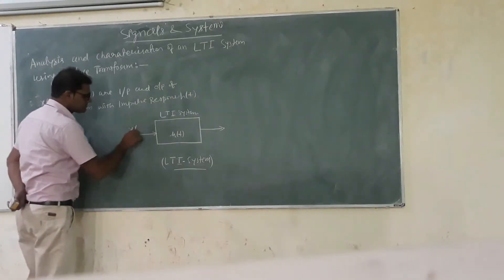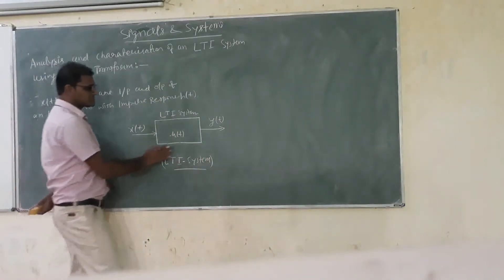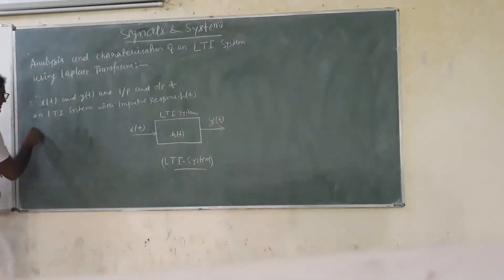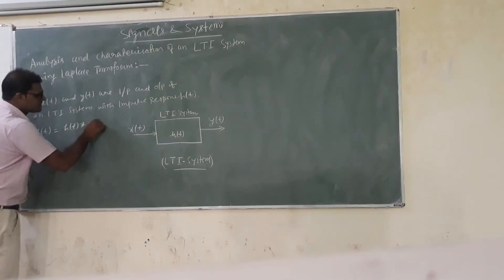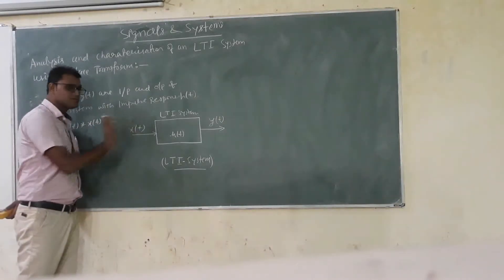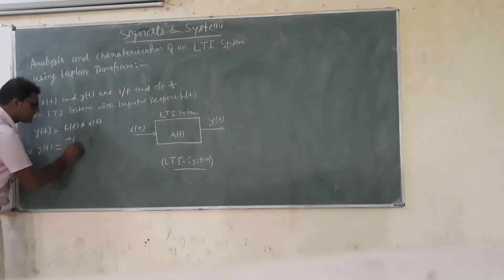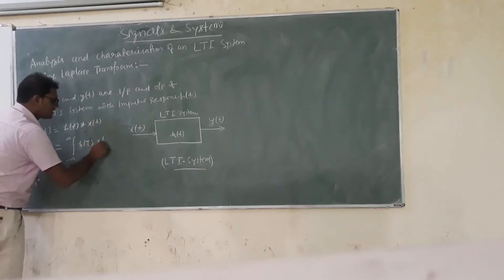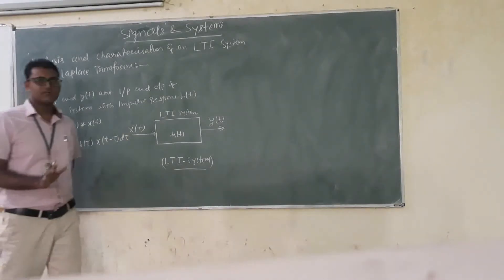If the input is XT and the output is YT, that means the response of the system is YT. Then the output of the system can be defined by taking the convolution of HT and input signal XT. So YT will be equal to the integral of H(tau) into X(t minus tau) d-tau, using the convolution formula for two signals.